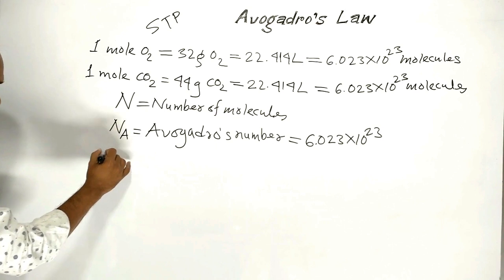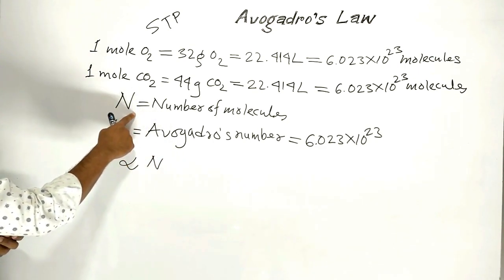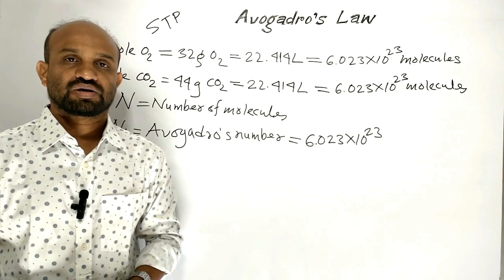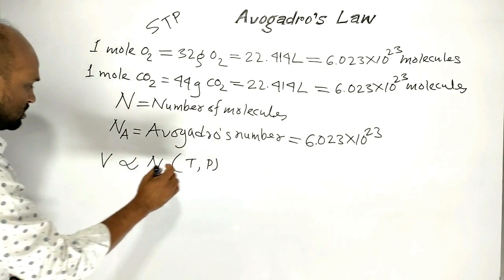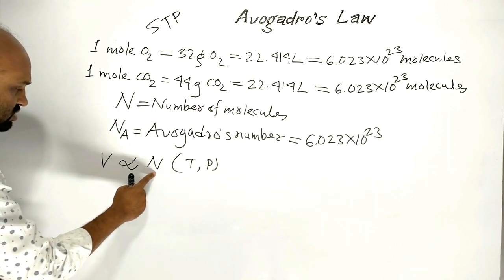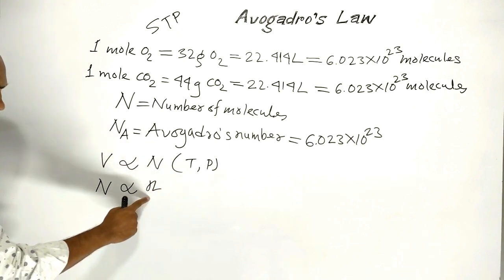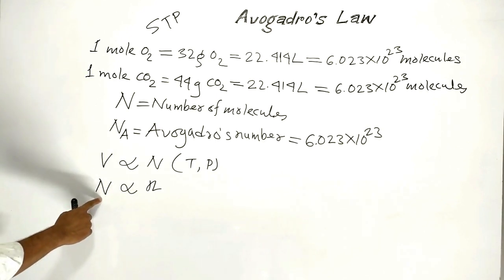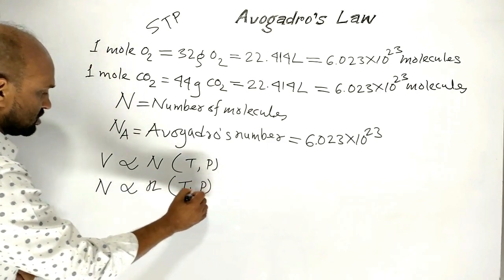The volume of a fixed amount of any gas is proportional to the number of molecules, because equal volumes of all gases contain equal numbers of molecules under similar conditions of temperature and pressure. So, at constant temperature and pressure, the volume of a definite mass of any gas is directly proportional to the number of molecules. Also, the number of molecules is proportional to the number of moles — lowercase n means number of moles — under similar conditions of temperature and pressure.